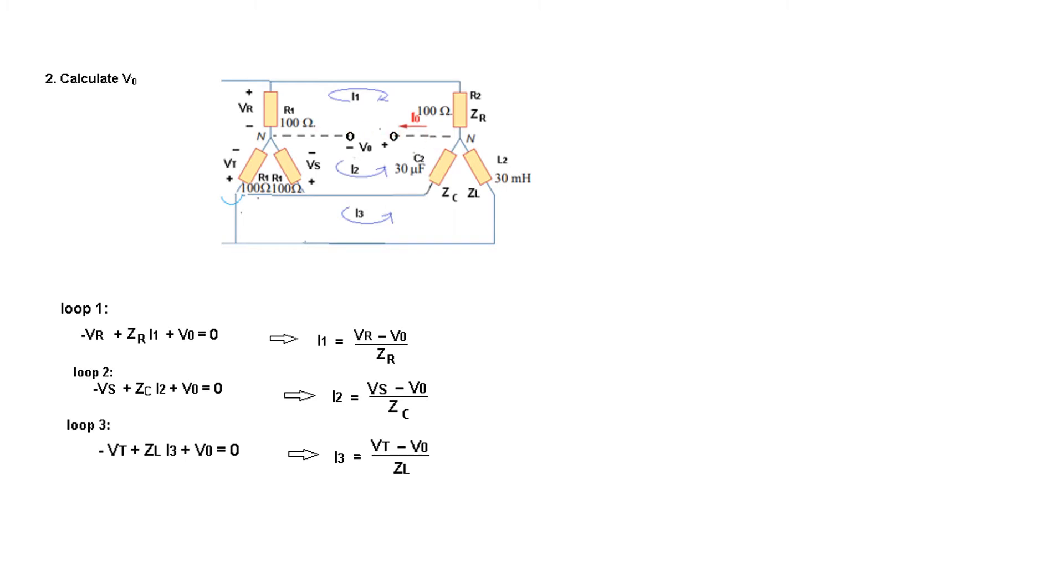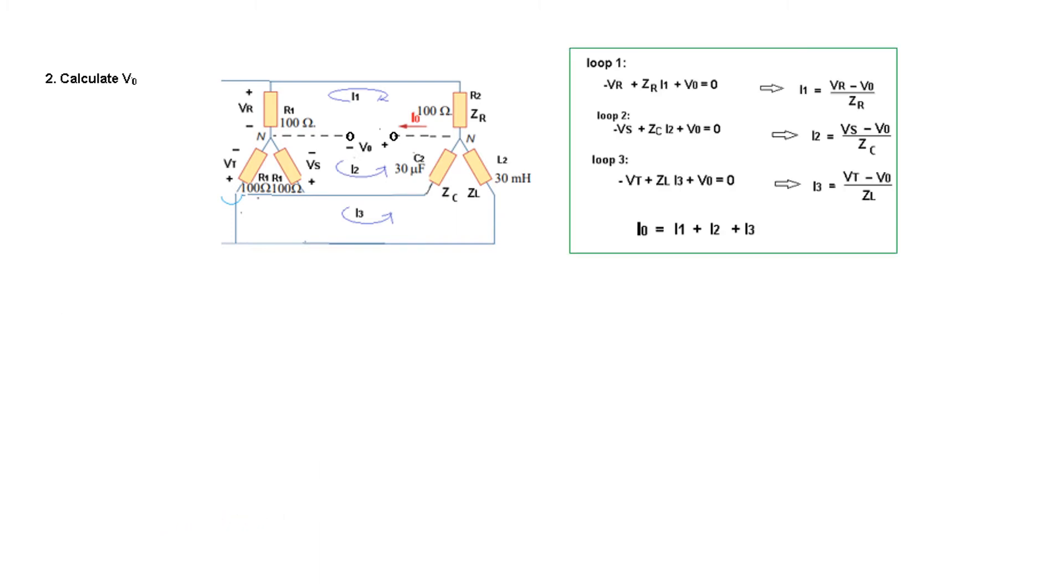We can say that i0, the return current, is the sum of the three currents: i0 = i1 + i2 + i3. In a three-wire system, the return line is absent—only the three lines are present. This means the current through this will be zero, so i0 equals zero. The summation of all three currents will equal zero.